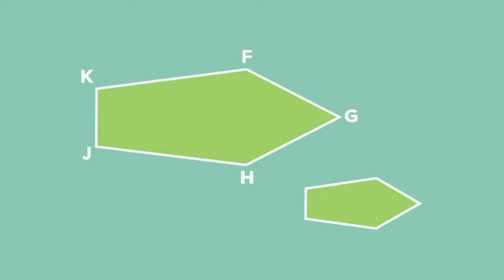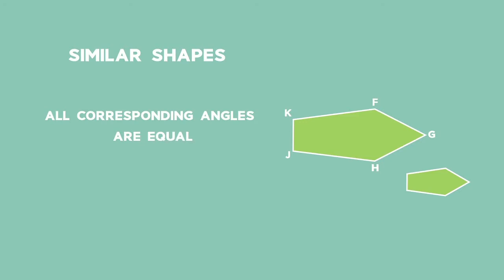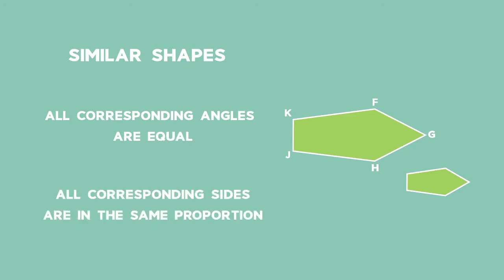Two shapes are similar when the only difference between them is their size or area. Similar shapes have all corresponding angles equal and all corresponding sides in the same proportion.